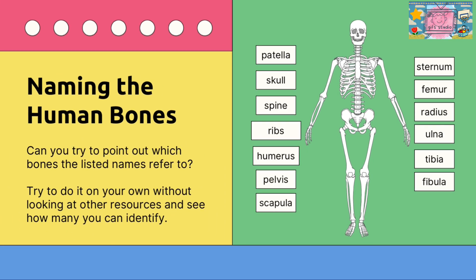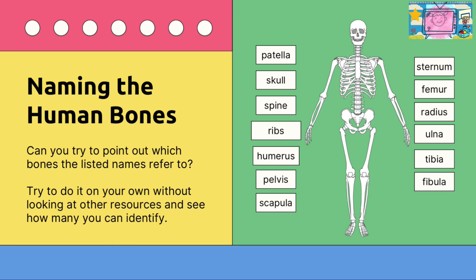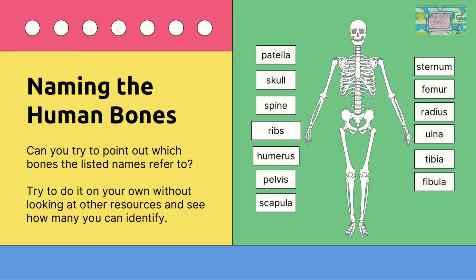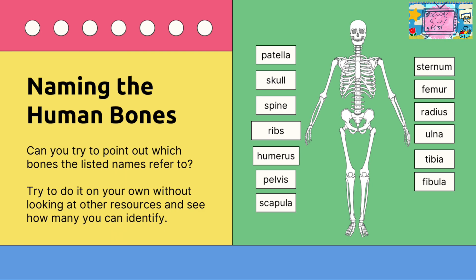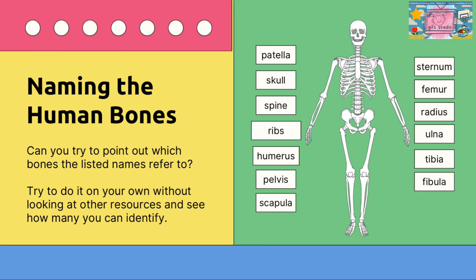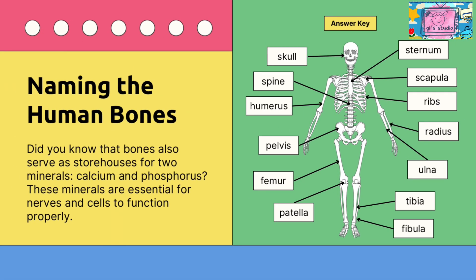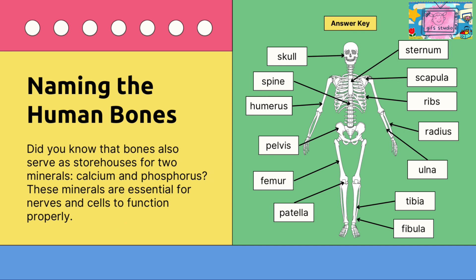Naming the human bones: can you try to point out which bones the listed names refer to? Try to do it on your own without looking at other resources and see how many you can identify. Did you know that bones also serve as storehouses for two minerals — calcium and phosphorus? These minerals are essential for nerves and cells to function properly. Here's the answer key — you can check your answers too.